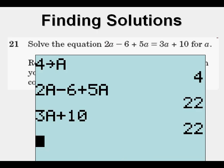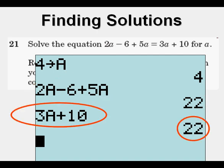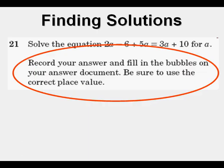We're interested in x = 4 because that represents a. We check by storing 4 to a: entering 2a - 6 + 5a gives 22, and entering 3a + 10 also gives 22. Therefore, a = 4 is the right answer.